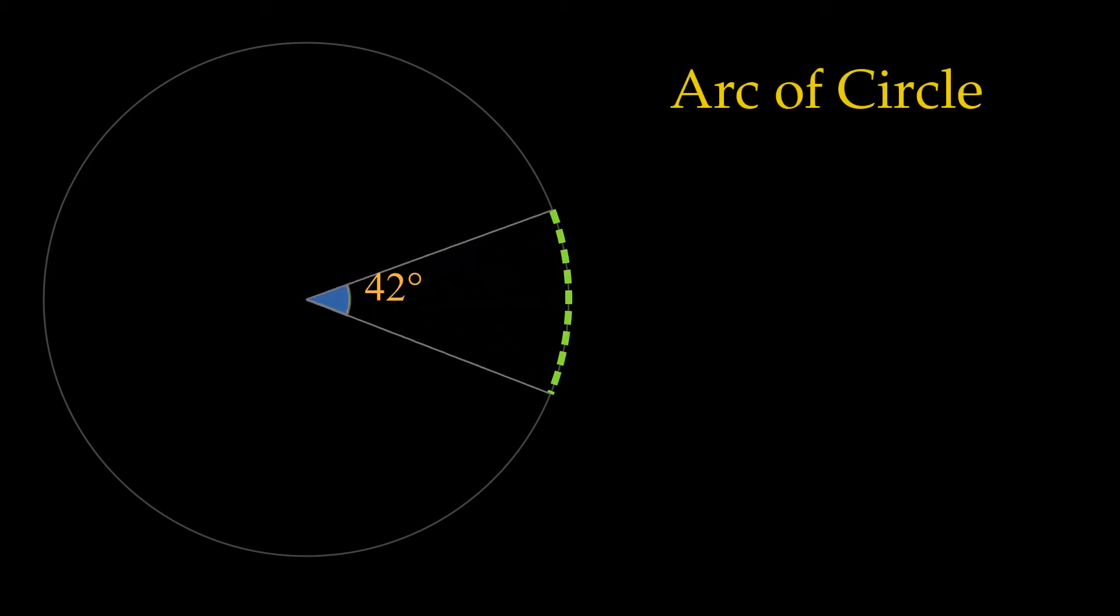The measure of an arc of a circle is equal to the measure of the central angle that intercepts the arc.